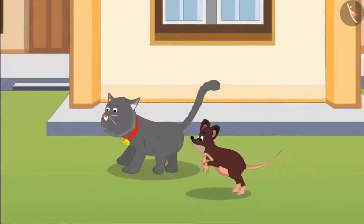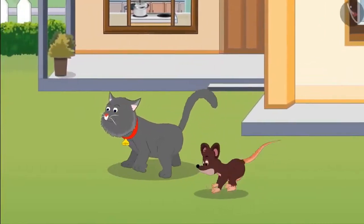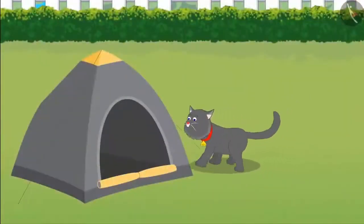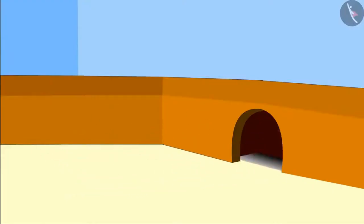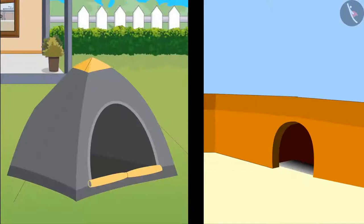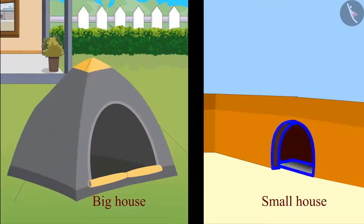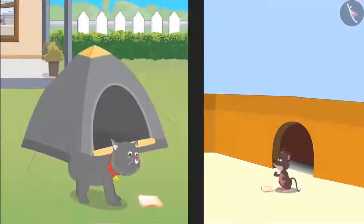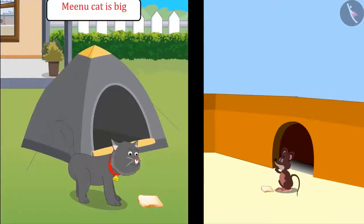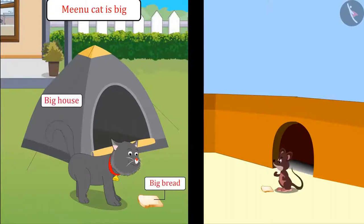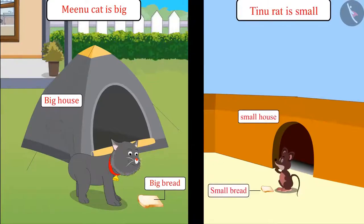After eating, Tinu and Minu play a lot and then leave for their home. Children, here is Minu's house and here is Tinu's house. Can you tell which one of them has a bigger house? Yes, you are right children. Minu's house is bigger than Tinu's house and Tinu's house is smaller than Minu's house. So kids, Minu's house is big and she ate big bread; Tinu's house is small so he took small bread.